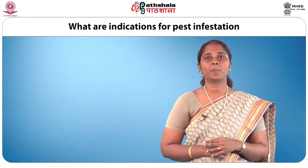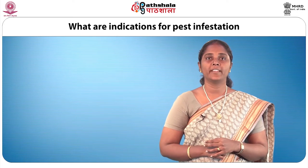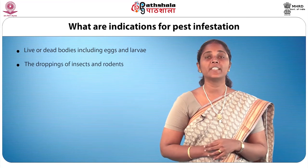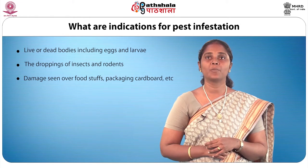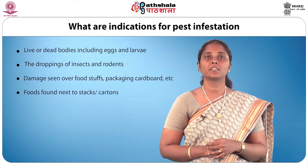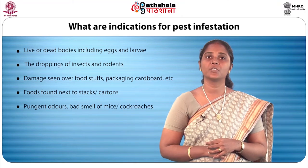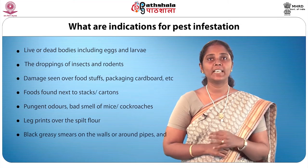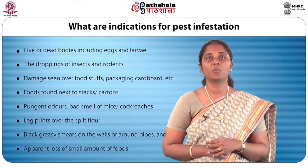The indications of pest infestation include the presence of live or dead bodies including eggs and larvae, droppings of insects and rodents, damage seen over food service packaging and cartons, foods found near stacks or cartons, pungent odors, bad smell of mice or cockroaches, footprints over spilt flour, and black greasy smears on walls or around pipes, as well as apparent loss of small amounts of food.